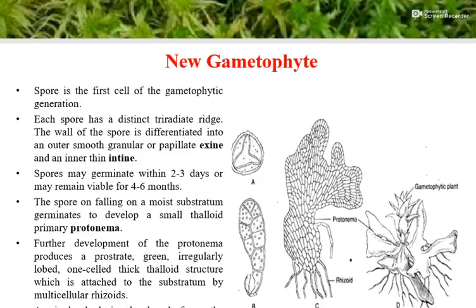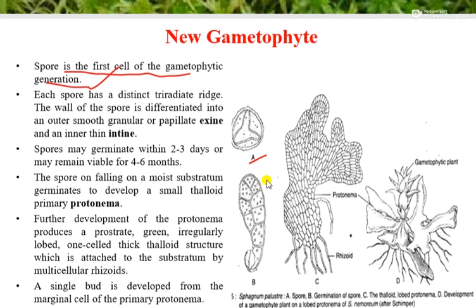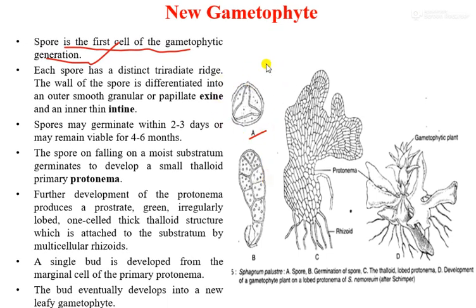As soon as the spore is formed, the sporophytic phase ends and the gametophytic phase begins. So the spore is the first cell of the gametophytic generation. In figure (a), this is the structure of a spore — it has a distinct tri-radiate ridge with three ridges visible. The wall of the spore contains two layers: the outer one is the exine and the inner one is the intine.